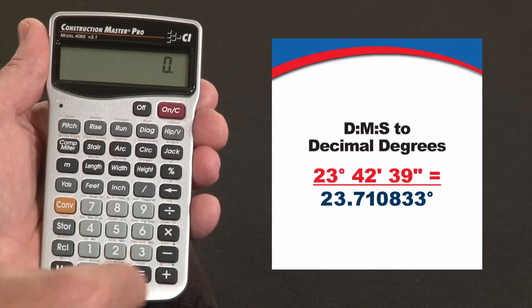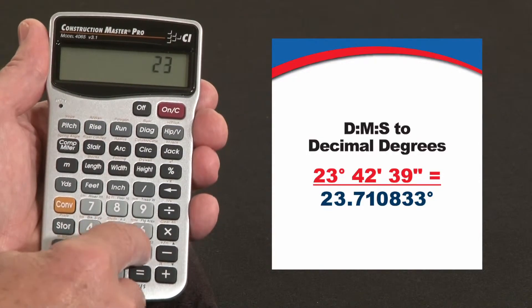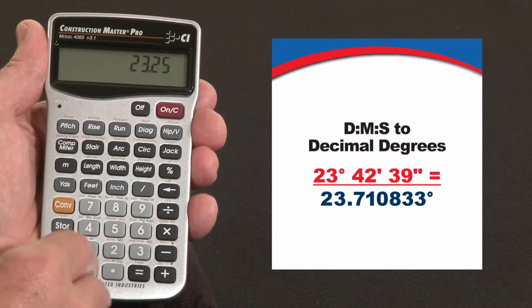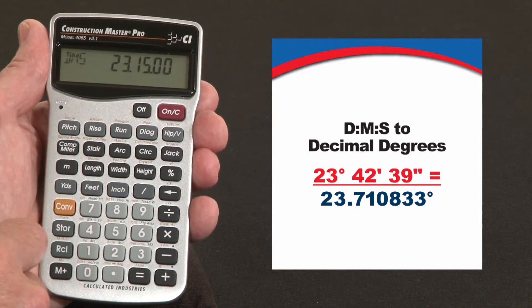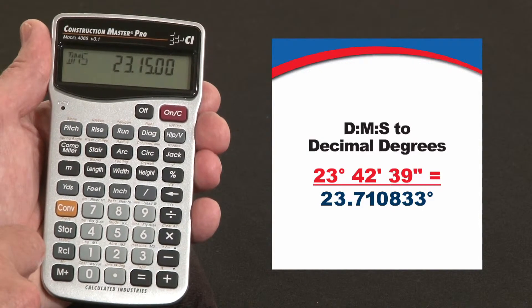If you've got a set of plans that says something like 23.25 degrees, what is that in DMS? Convert decimal point, it's 23 degrees, 15 minutes, and no seconds.